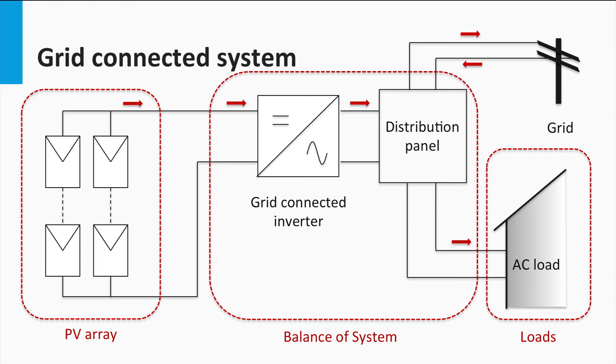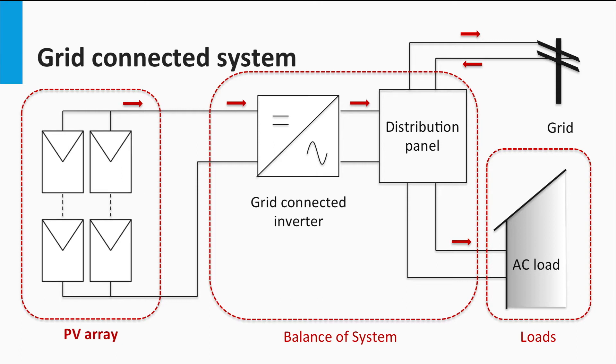As discussed before, the grid-connected PV system has these important PV system components. The PV array is an interconnection of modules that supplies the required photo-generated power to the system. Power rating of the array is determined based on the system design.